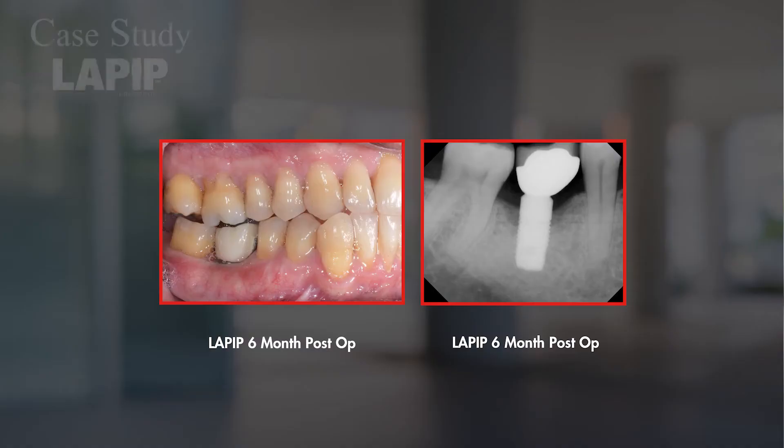The patient was followed up at two weeks, four weeks, and then at six months. Following the LAPIP procedure, heavy occlusal adjustment was completed on all the teeth in the lower right quadrant, specifically around that implant. The implant was a cement-retained restoration, so we opted to keep the implant in place during LAPIP therapy.